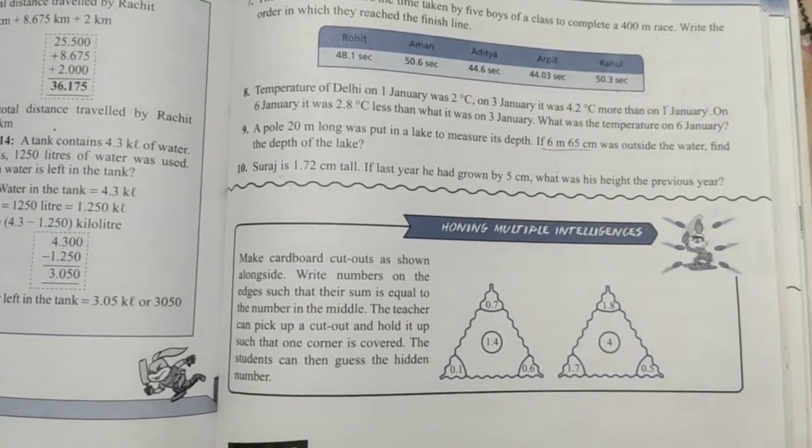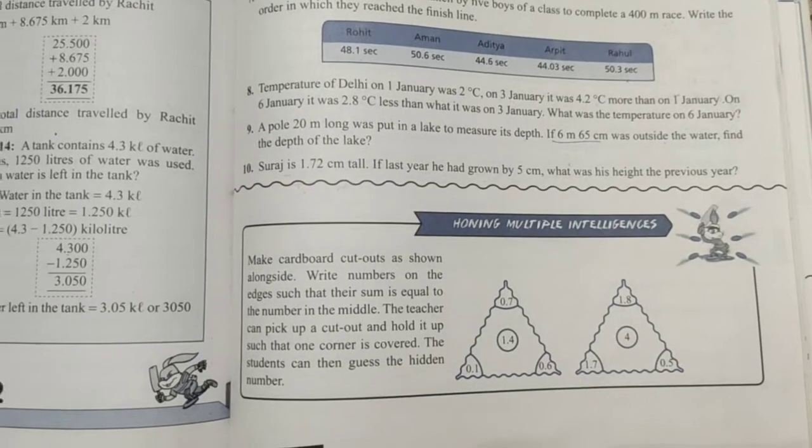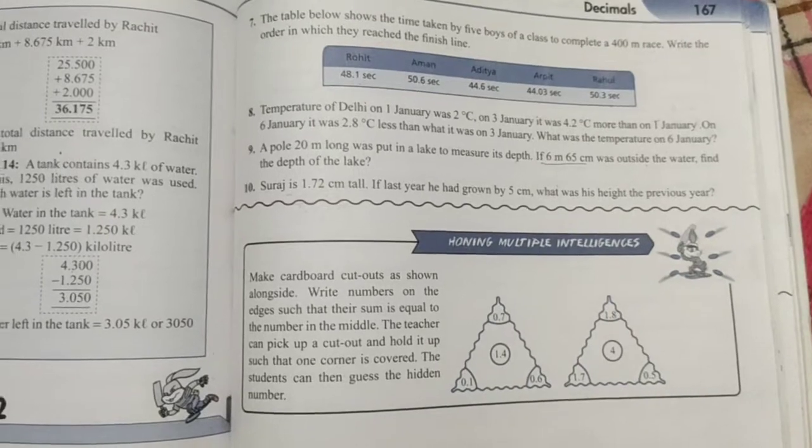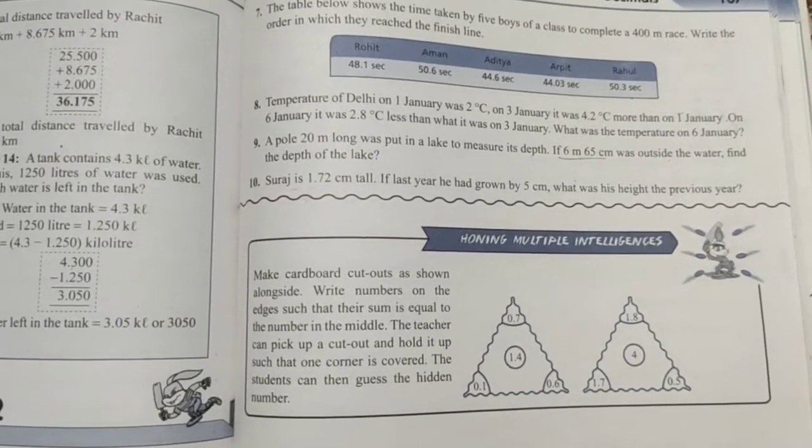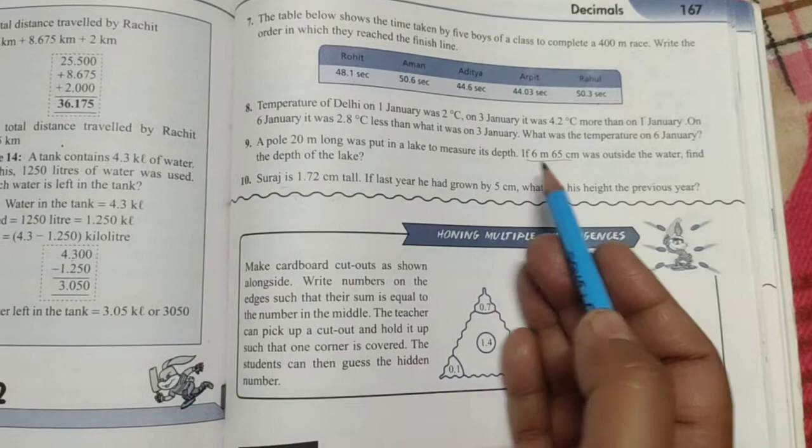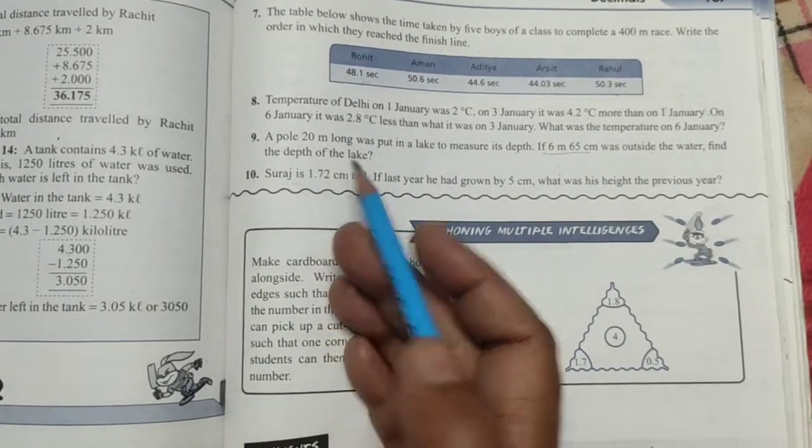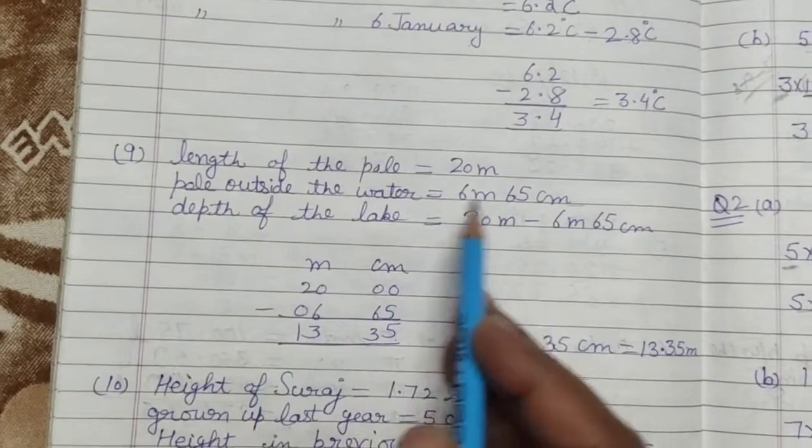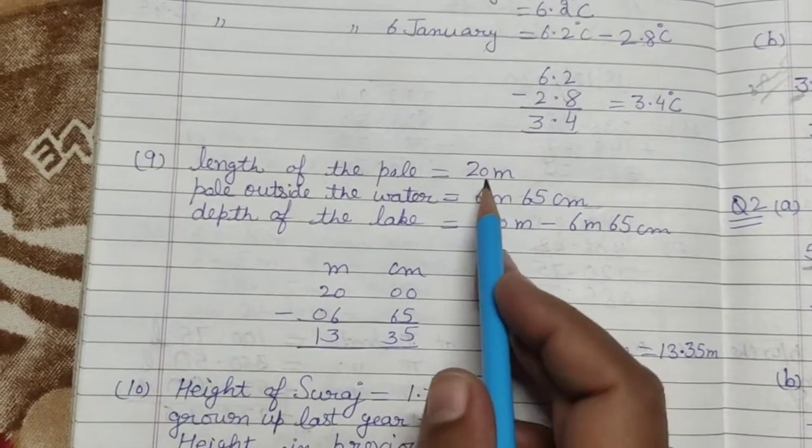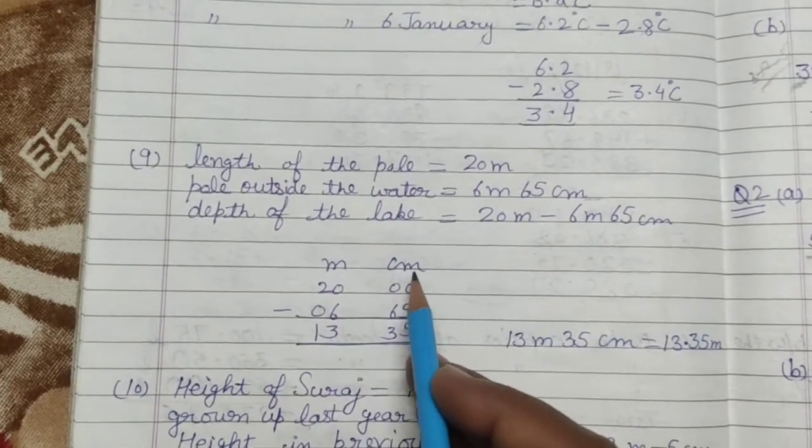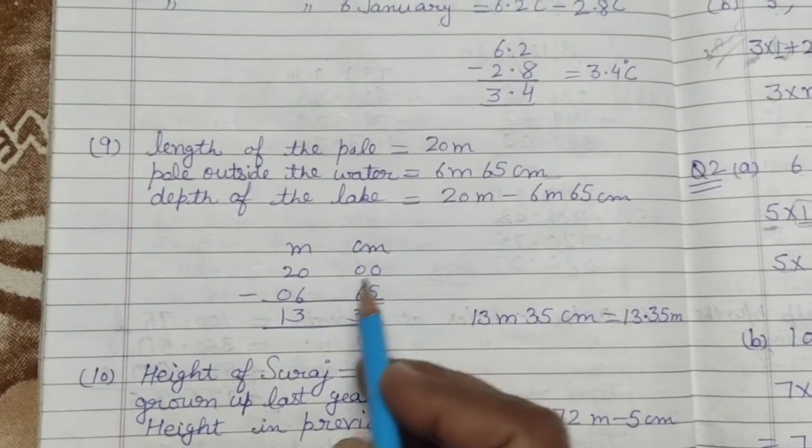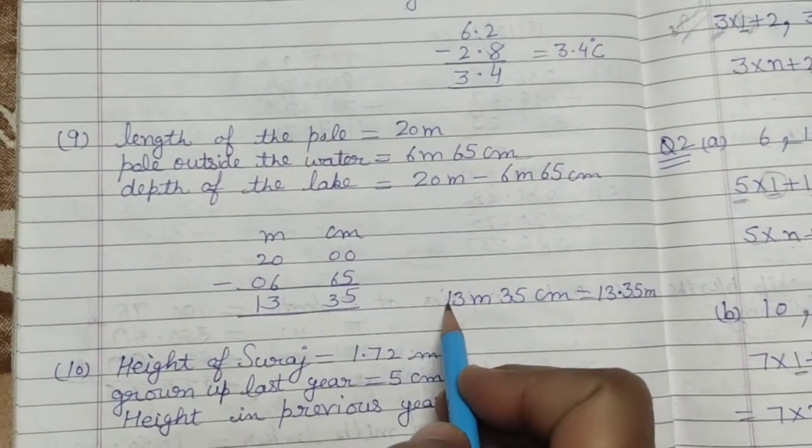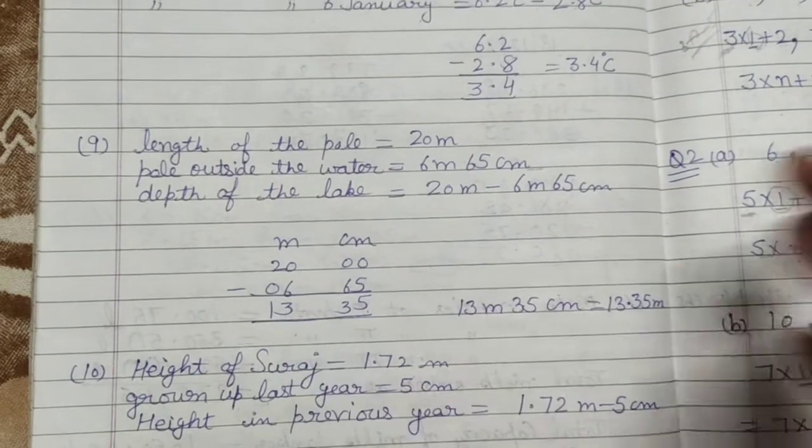We have to find the depth of the lake. Depth means the length of the pole in the lake. The length of the pole is 20 meters, outside is this one, depth we have to find out. We have to minus from 20. But 20 meters is not something, I have written here, and we will minus 6 meters 65 centimeters and we will have the answer, so subtraction.